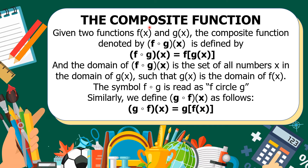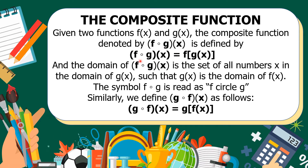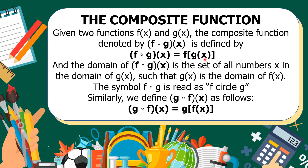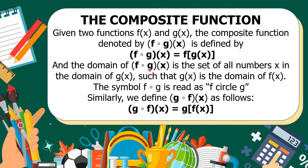What is a composite function? Given two functions f of x and g of x, the composite function denoted by f circle g of x is defined as f circle g of x is equal to f of g of x. This means that to find f circle g of x, take f of x and replace x with g of x. The domain of f circle g of x is the set of all numbers x in the domain of g of x such that g of x is in the domain of f of x.